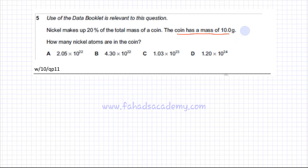So 20% of 10 grams, if you do your calculation, is going to be 2 grams. So the coin contains 2 grams of nickel.